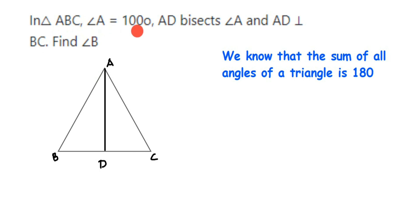AD bisects angle A. You can see this AD is bisecting angle A. Bisecting means it's dividing angle A into two equal parts. And AD is perpendicular to BC. Perpendicular means it makes a 90-degree angle with the base.